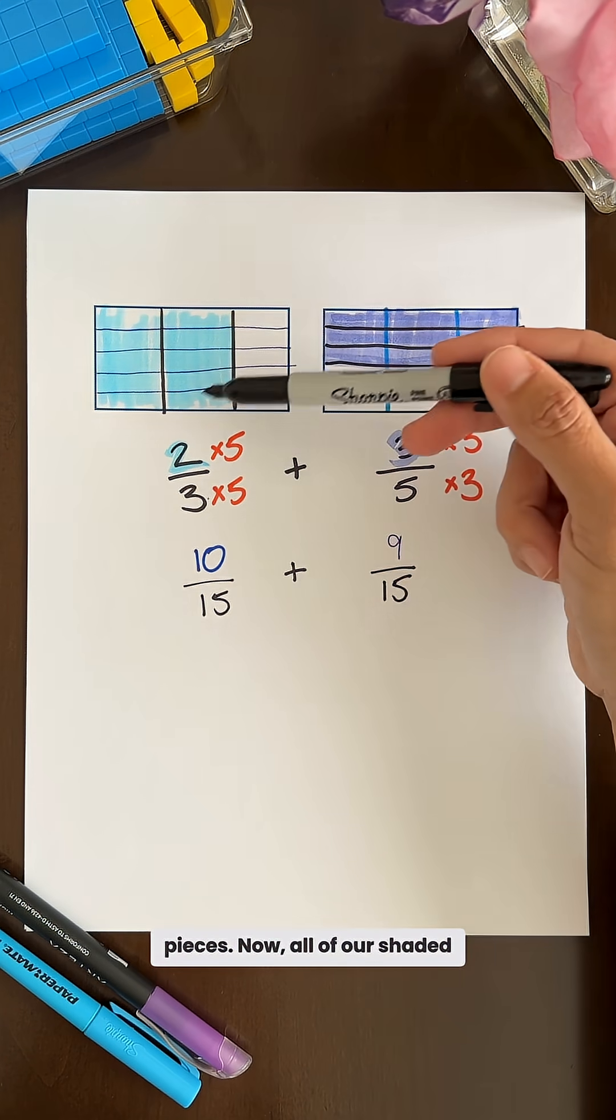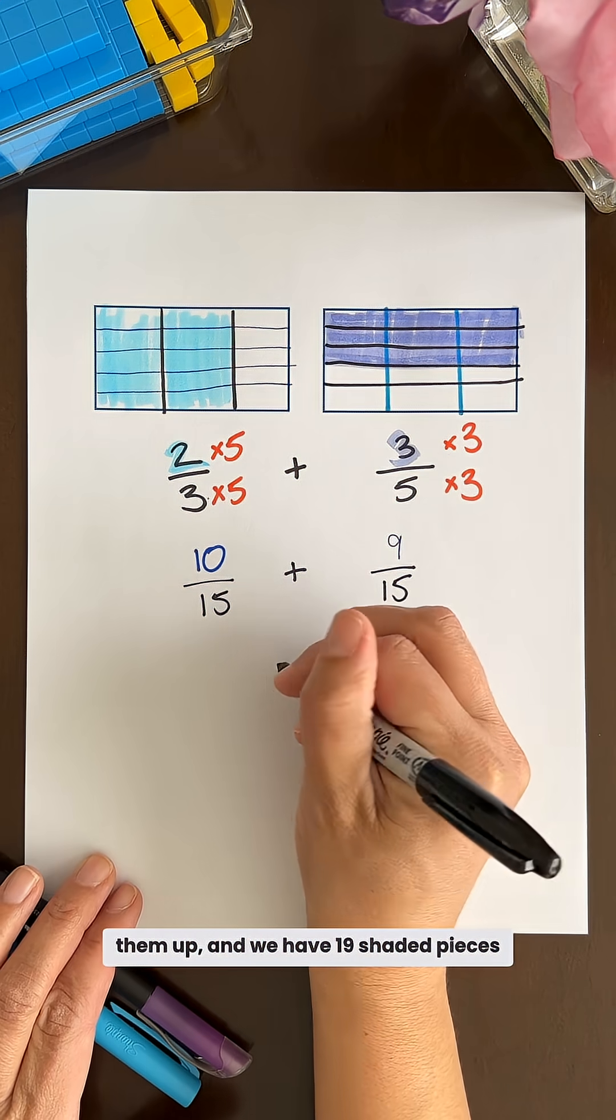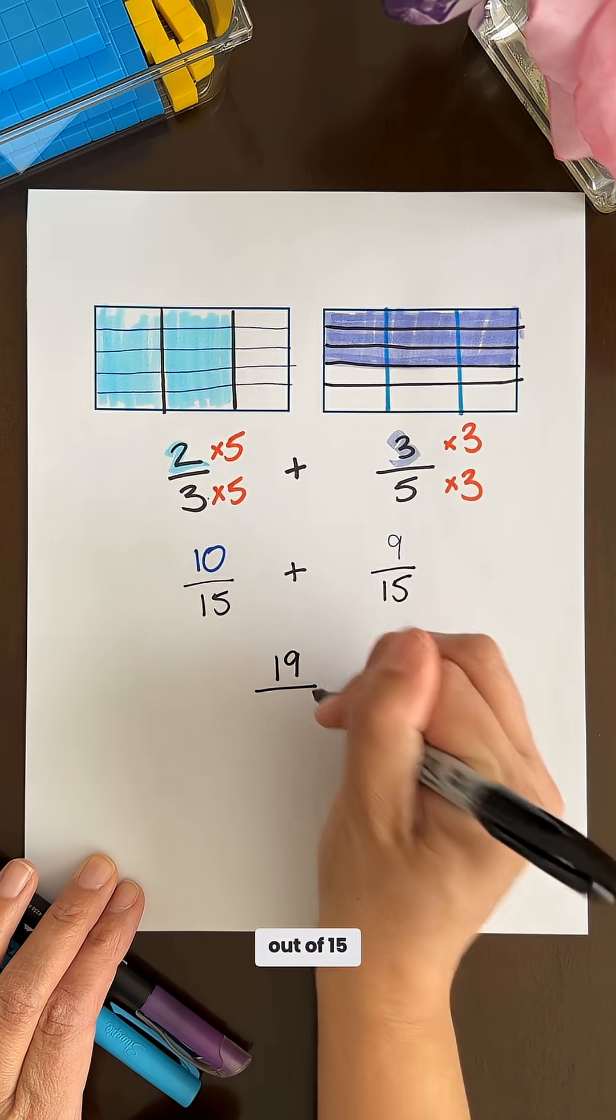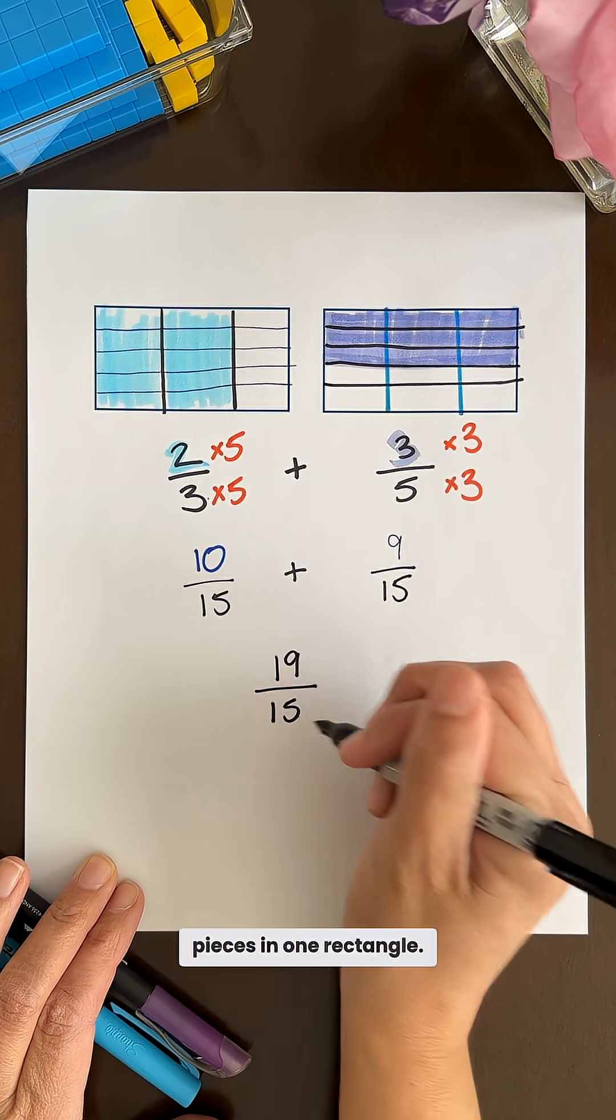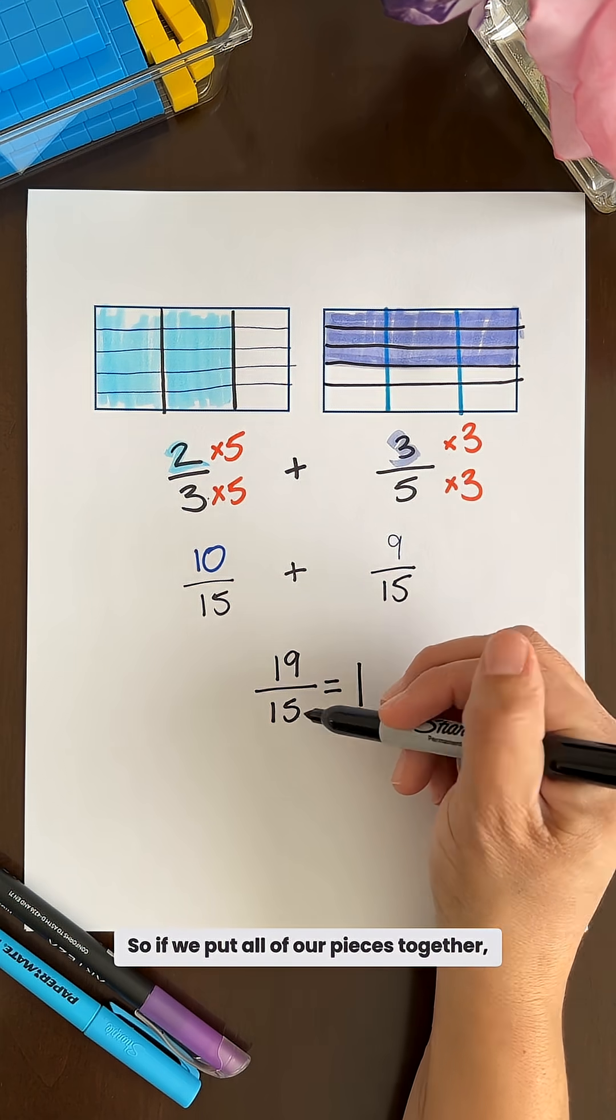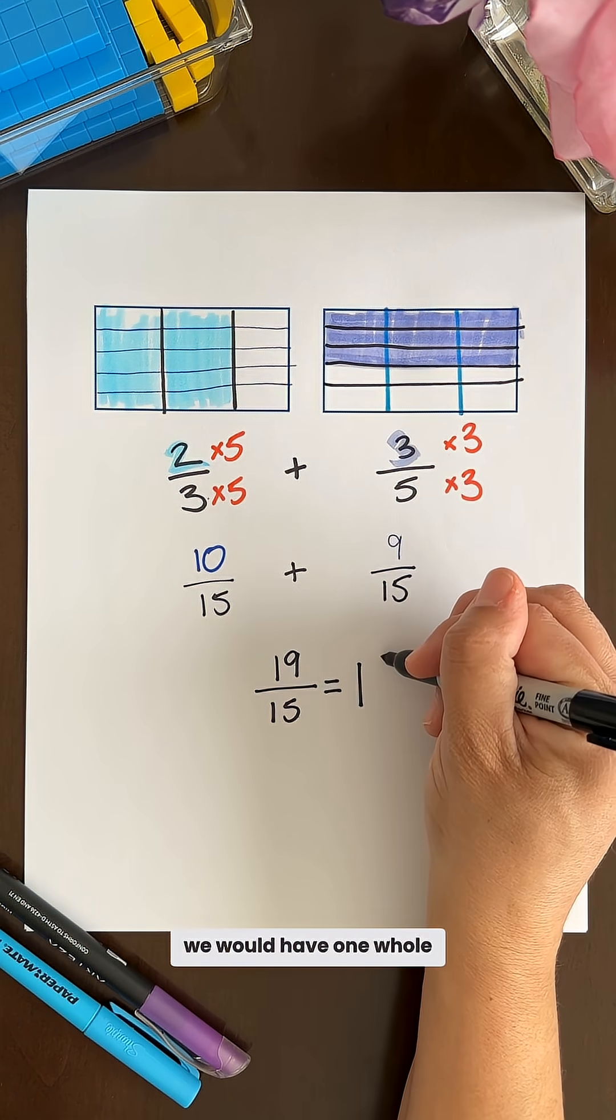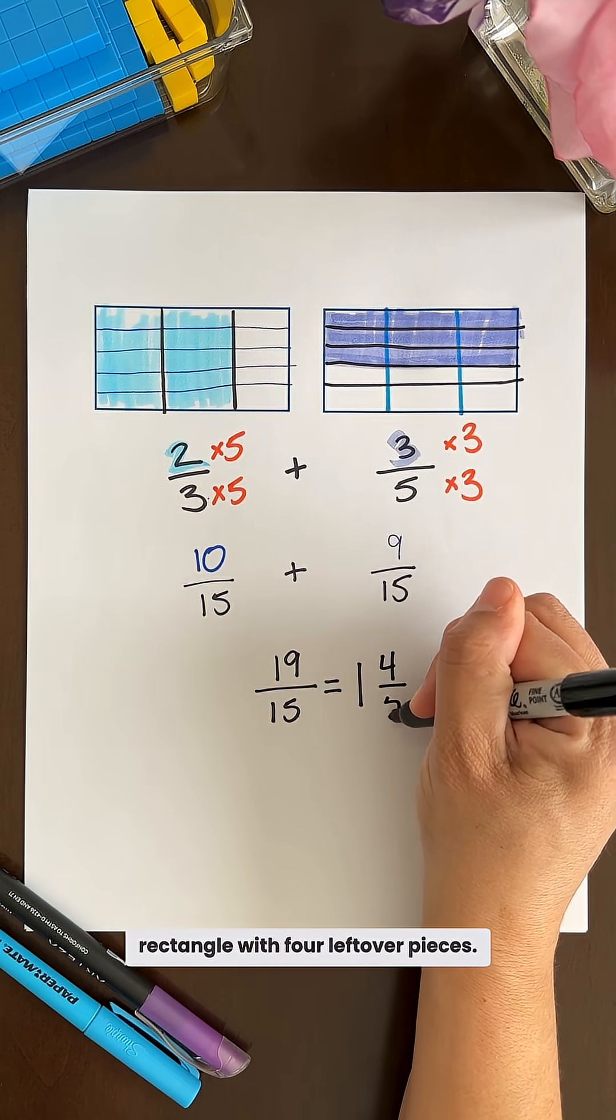Now all of our shaded pieces are the same size so we add them up and we have 19 shaded pieces out of 15 pieces in one rectangle. So if we put all of our pieces together we would have one whole rectangle with four left over pieces.